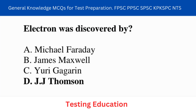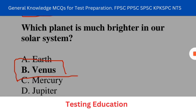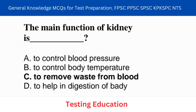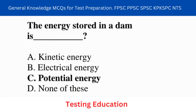Question number one: the electron was discovered by J.J. Thomson. Question number two: which planet is much brighter in our solar system? Next question: the main function of the kidney is to remove waste from our blood.